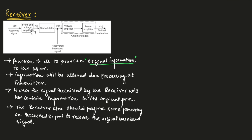Next, the signal is given to the demodulator, which demodulates the received signal to recover the original baseband signal. So the output of the demodulator will be the recovered baseband signal. After recovering the original baseband signal, it is voltage and power amplified.